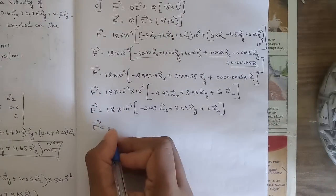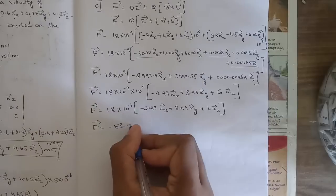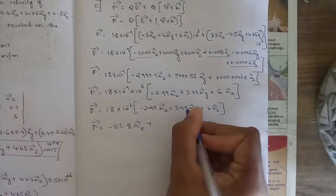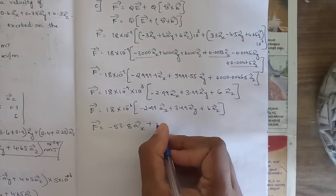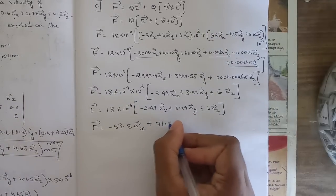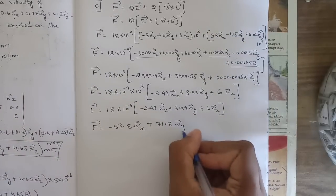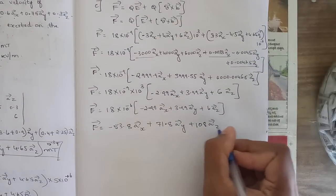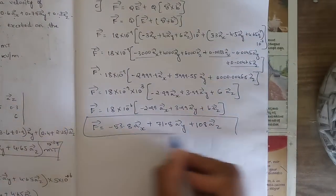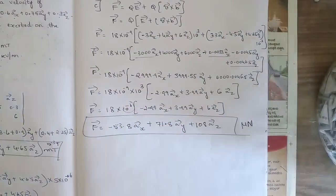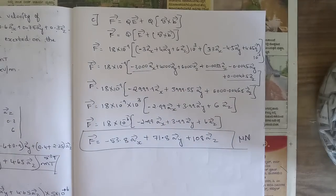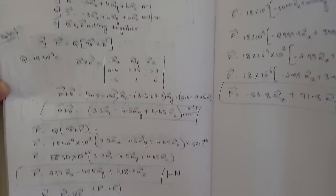Multiplying: 18 × 2.99 ≈ 53.8ax, 18 × 3.99 ≈ 71.8ay, 18 × 6 = 108az. So F ≈ (−53.8ax + 71.8ay + 108az) micronewtons. That is the answer of the force for the third sub-question, which was the combined Lorentz force case.